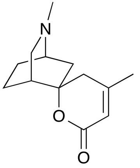Dioscorine is a neurotoxin that acts by blocking the nicotinic acetylcholine receptor. It is generally isolated in tandem with other alkaloids such as diocene, but is usually the most potent toxin in the mixture. It is a convulsant, producing symptoms similar to picrotoxin, with which it shares a similar mechanism of action. Dioscorine is not to be confused with Dioscorin, the yam storage protein.